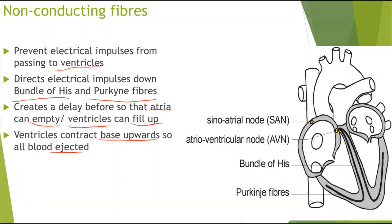This means that all blood will be ejected. If the ventricles were to contract from halfway up, only the blood above that point would be ejected into the arteries — the aorta and the pulmonary artery. But because contraction is from the base upwards, all blood is ejected, maximizing the amount of blood passed on to the arteries.